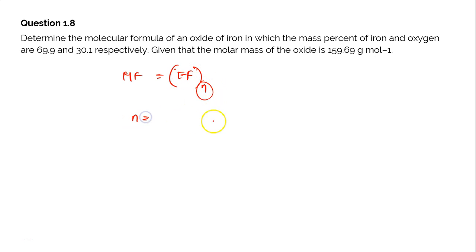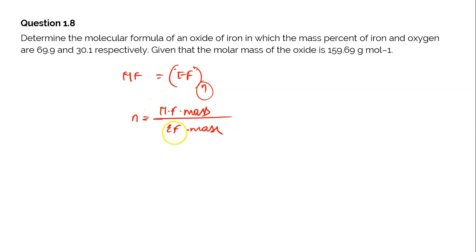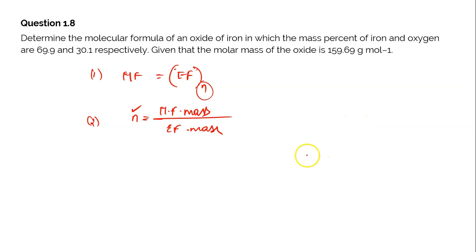Let me tell you a few important points about identifying molecular formula. Empirical formula is the short form of molecular formula. The relationship is: molecular formula equals empirical formula into n, where n equals the ratio of molecular formula mass divided by empirical formula mass. If you multiply n with the empirical formula, you get the molecular formula. Please make note of these two formulae — they are very important for the concept of empirical and molecular formula.